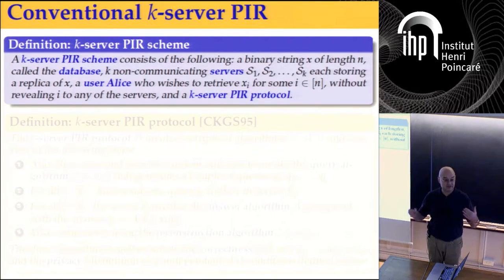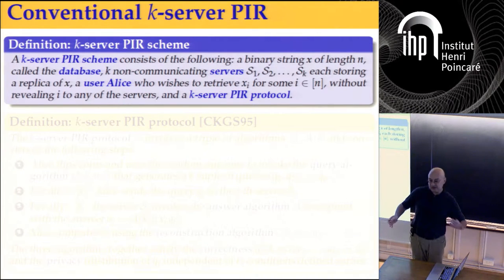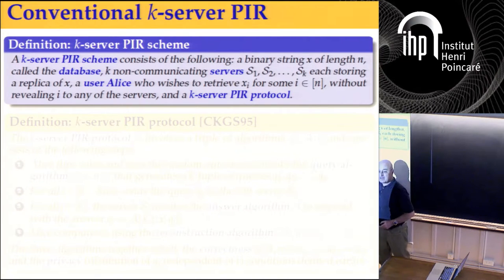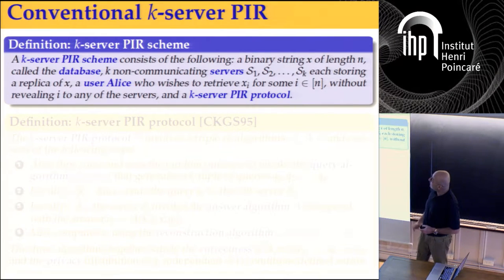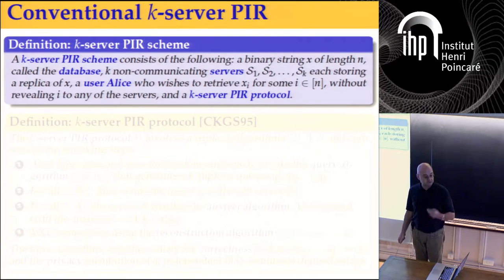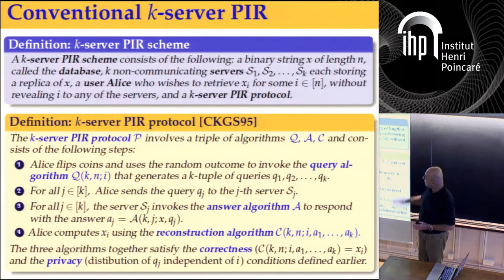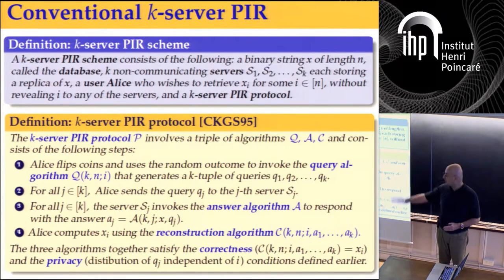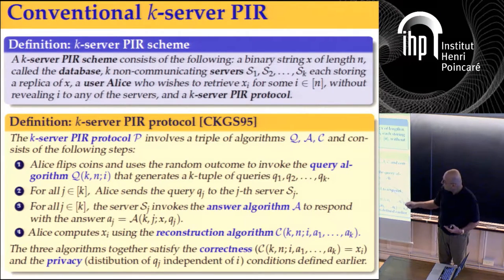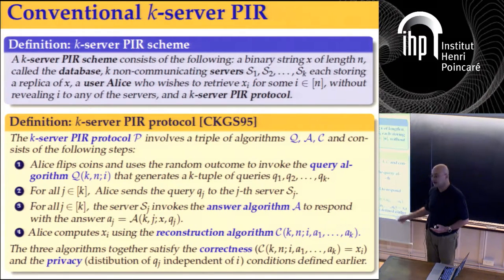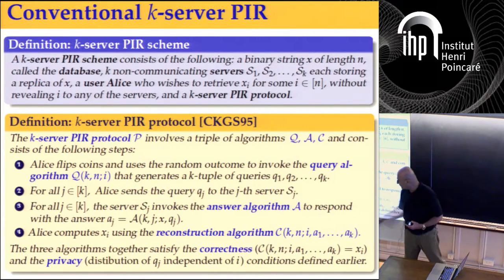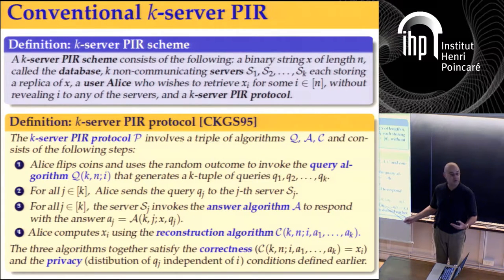Before the example, I need some definitions. We'll have a concept of a scheme, which has all the things around the protocol: a database (an n-bit binary string), K non-communicating servers, a user Alice, and a protocol consisting of three algorithms — a query generation algorithm Q, an answer algorithm A used by the servers, and a reconstruction algorithm used by Alice to retrieve the bit.